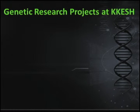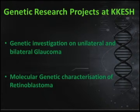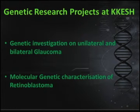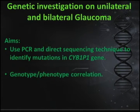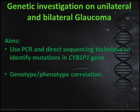I'm going to mention a couple of research projects currently active in our department, just as examples — though we have so much more. The first project investigates unilateral and bilateral glaucoma. The aims are to use PCR and direct sequencing techniques to identify mutations in the CYP1B1 gene, which is the most common gene causing glaucoma, and then study the genotype-phenotype correlation from those results.